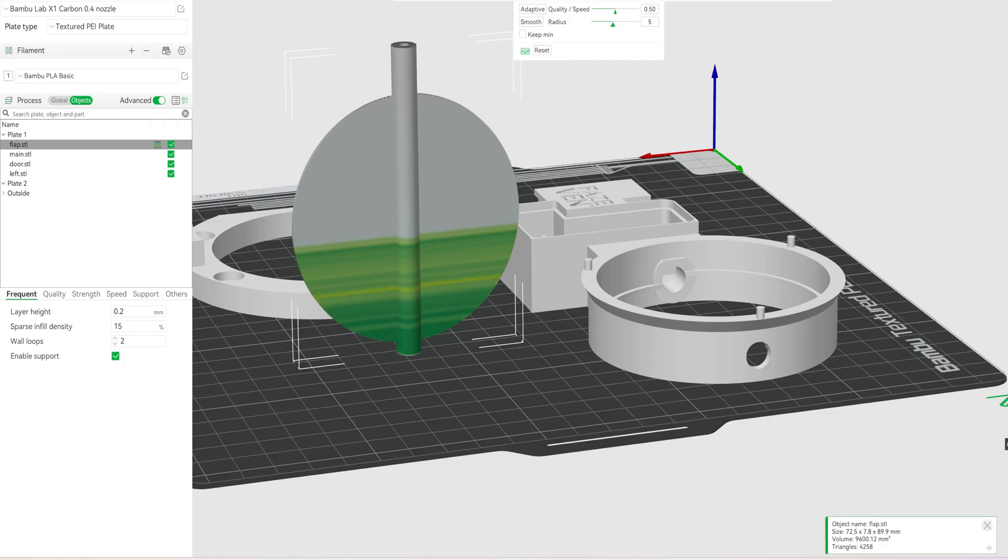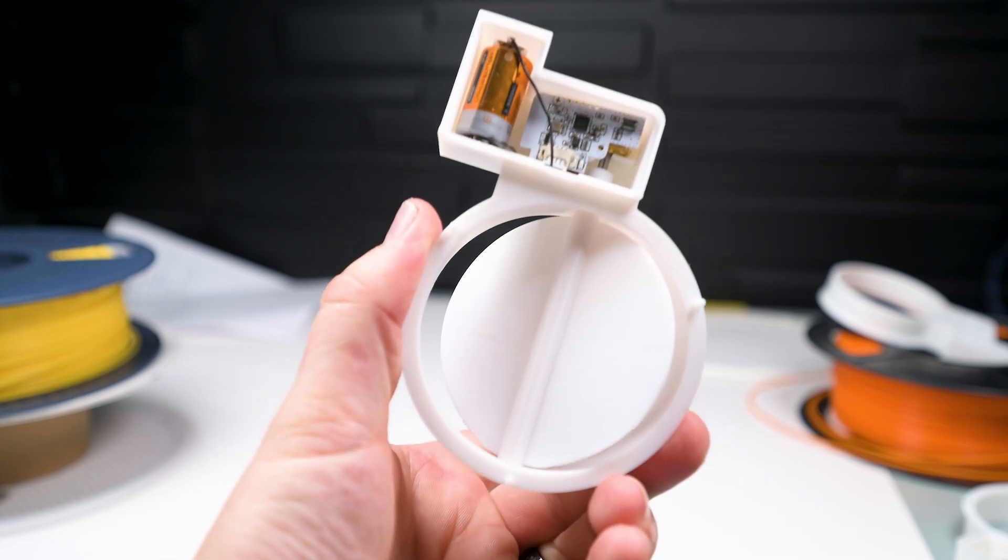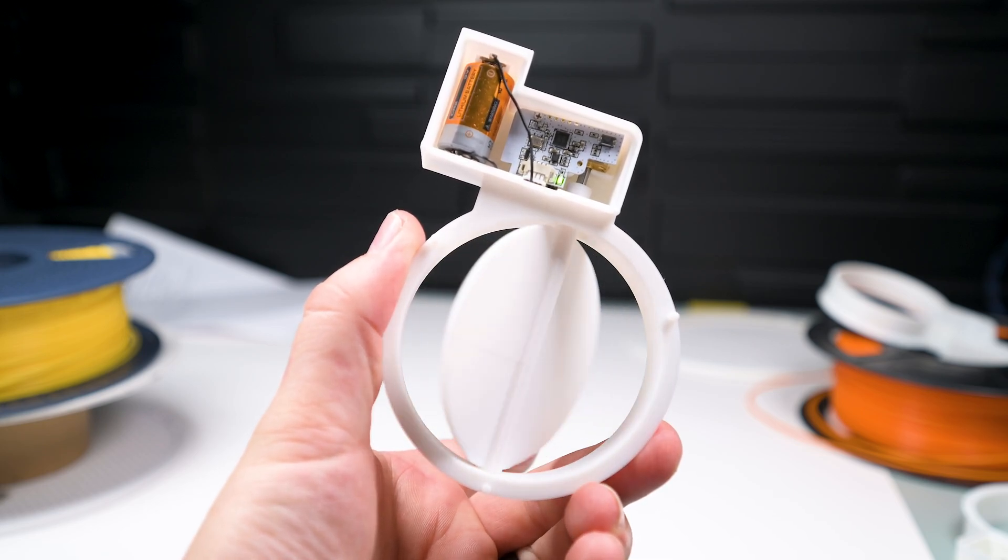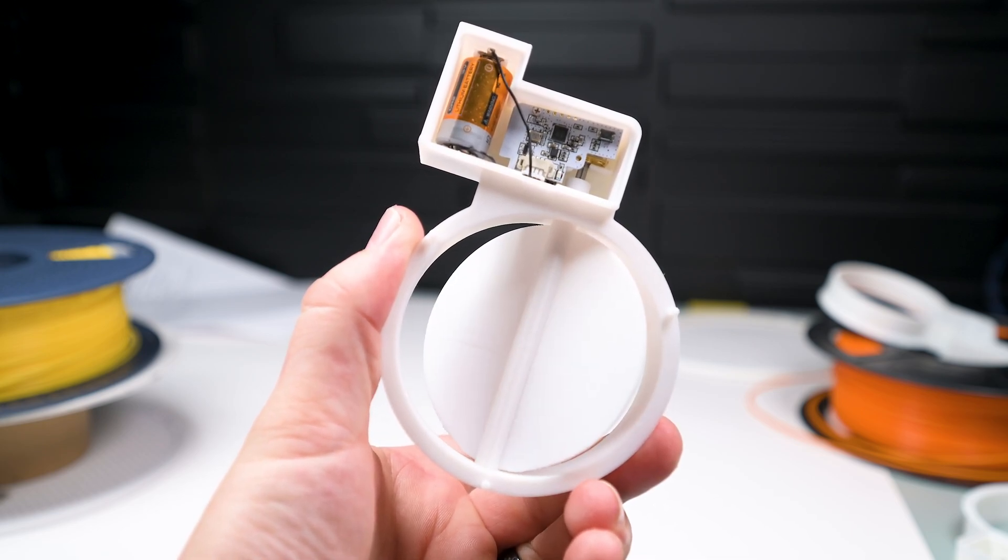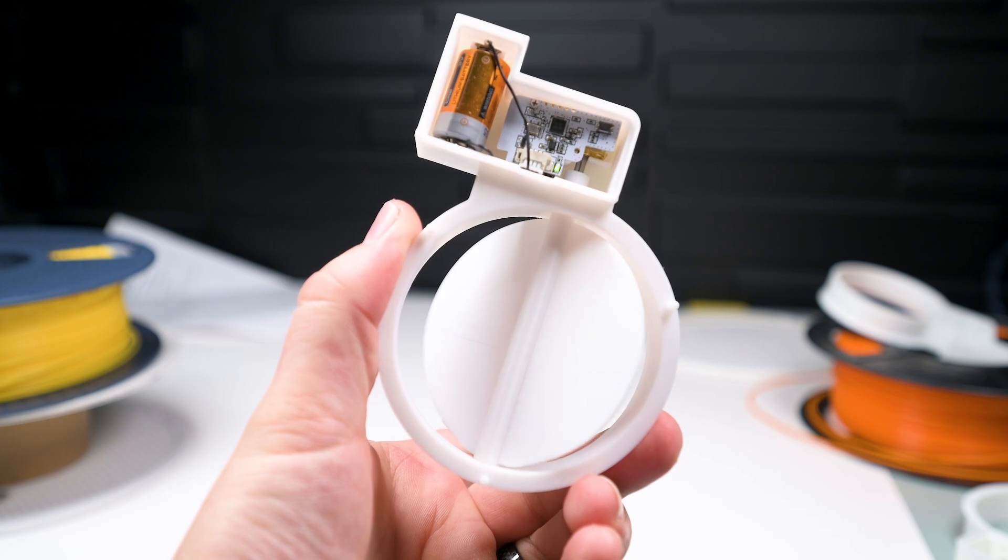I added variable layer height this time around. The electronics are in and I can now control the flap from my phone. The SwitchBot motor actually needs to hit a physical stopper, otherwise it just spins twice and stops on its own.